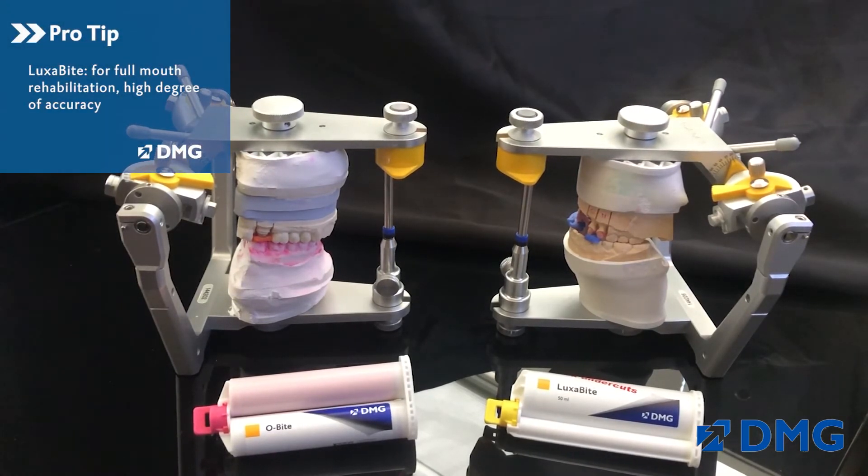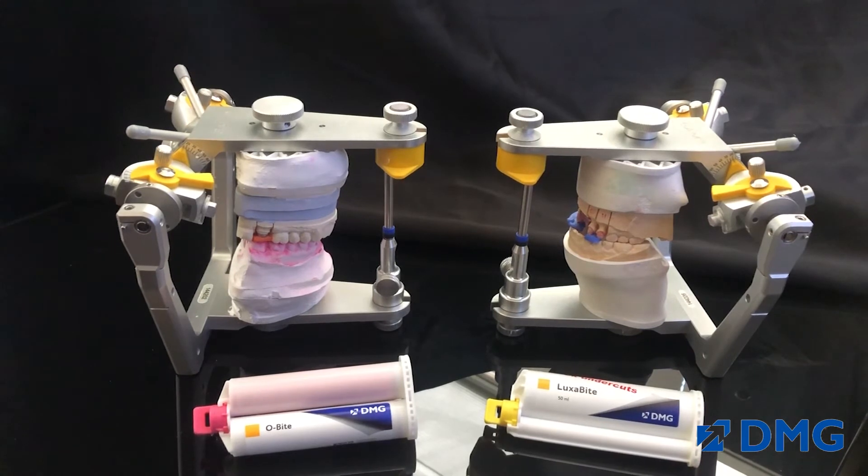This is a bisacryl material, so there's no compression on mounting like you can get with a polyvinyl material. It's very rigid with no sponginess to it, so it has a very high degree of accuracy. But you've got to be careful because if you get it in undercuts it won't come out.